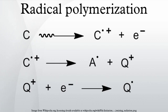Free radical polymerization is a method of polymerization by which a polymer forms by the successive addition of free radical building blocks.